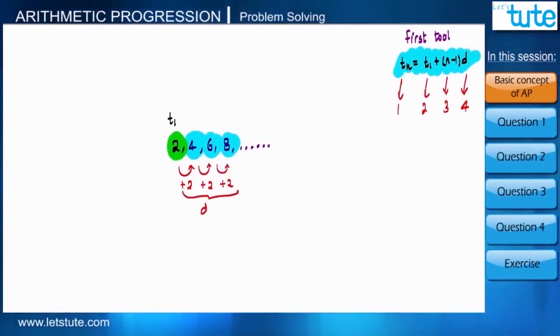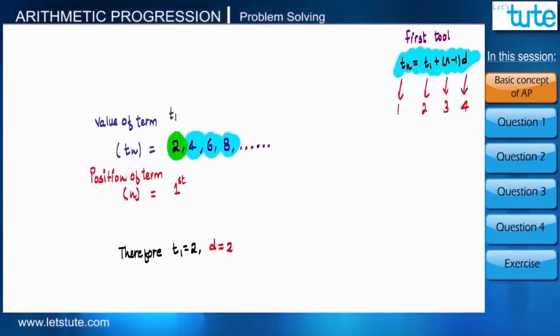So the common difference d is 2. Or we can even say that the value of the term at the first position is 2, at the second position is 4, and like that, the value of the term at the fourth position is 8. That means we can say that n represents the position of the term, where tn represents the value of term at that particular position.